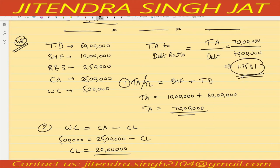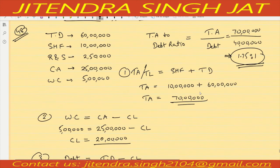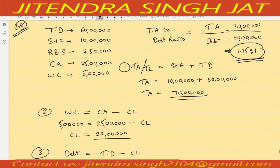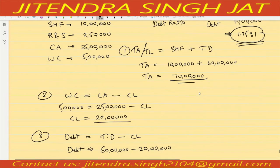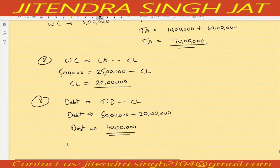So this is our total assets to debt ratio of 1.75 is to 1. I hope the question is clear to everyone.